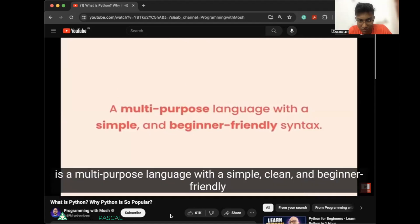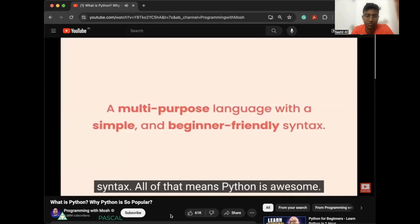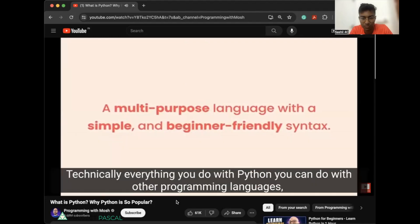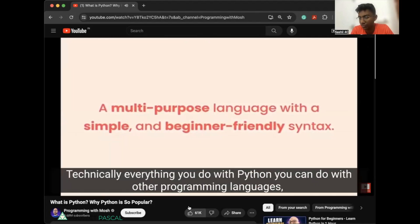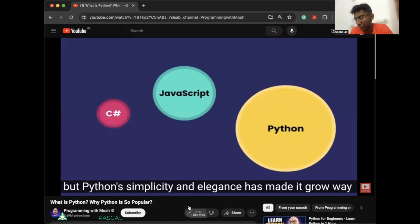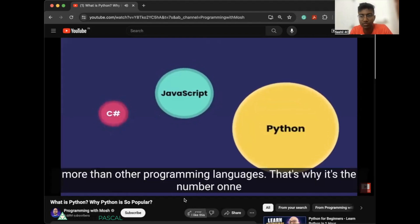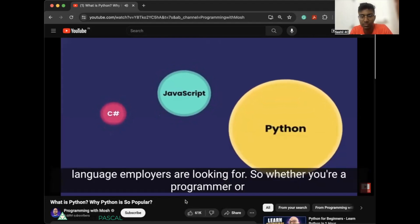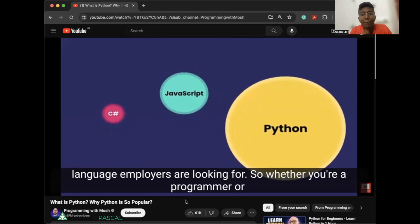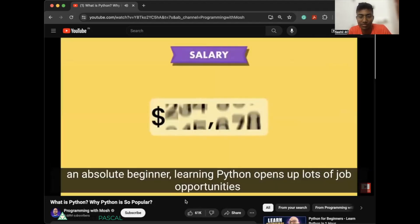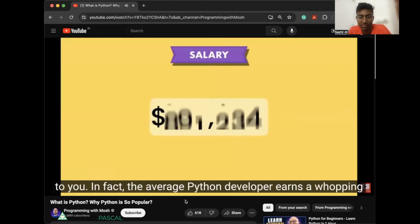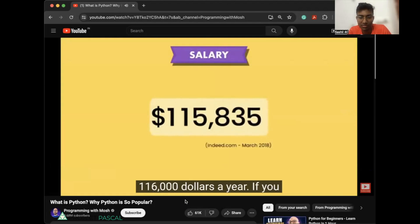So in a nutshell, Python is a multi-purpose language with a simple, clean, and beginner-friendly syntax. All of that means Python is awesome. Technically, everything you do with Python can do with other programming languages, but Python's simplicity and elegance has made it grow way more than other programming languages. That's why it's the number one language employers are looking for. So whether you're a programmer or an absolute beginner, learning Python opens up lots of job opportunities. In fact, the average Python developer earns a whopping $116,000 a year.